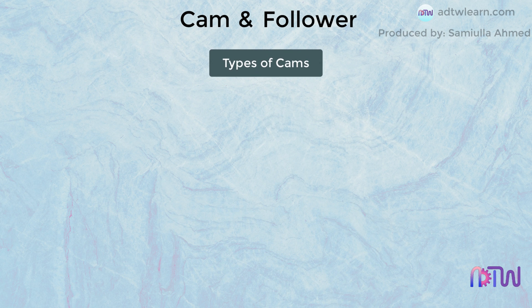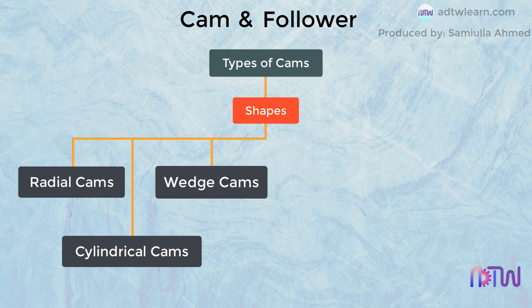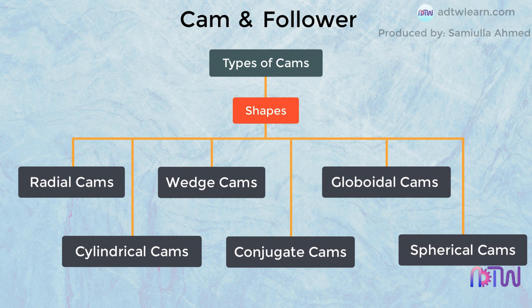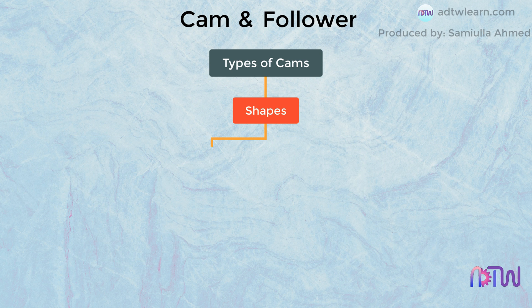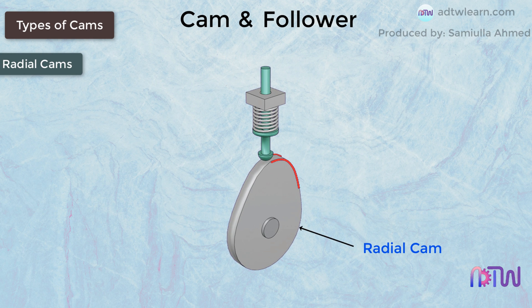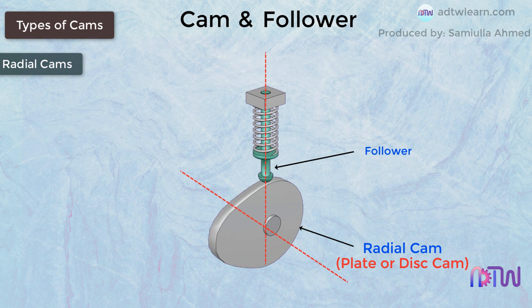Types of cams: cams are classified by their shapes. There are radial cams, cylindrical cams, wedge cams, conjugate cams, globoidal cams, and spherical cams. A radial cam is made from a flat plate or disc whose outer circumference is designed to produce the required movement of the follower. Hence this type of cam is also called a plate or disc cam. In this cam, the axis of the disc is perpendicular to the motion of the follower.